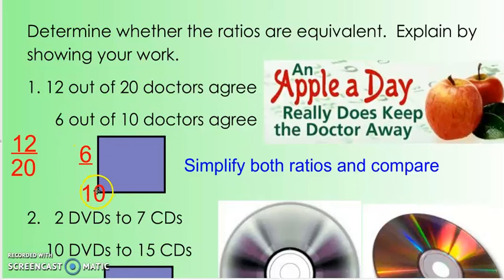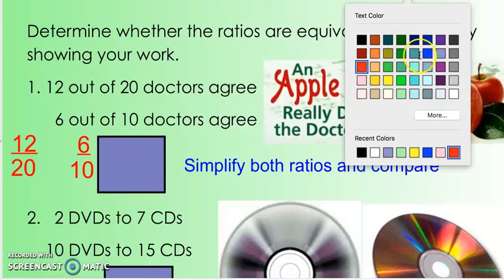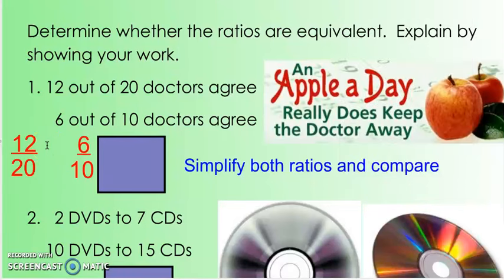Now if we simplify this, what goes into 12 and 20? Yes, 4 does. And if I divide 12 by 4, I get 3. And if I divide 20 by 4, I get 5. And so we have 3 to 5.